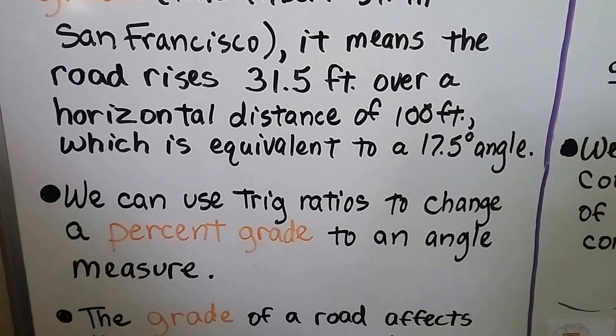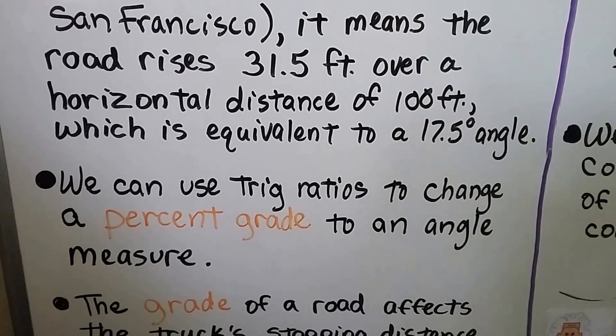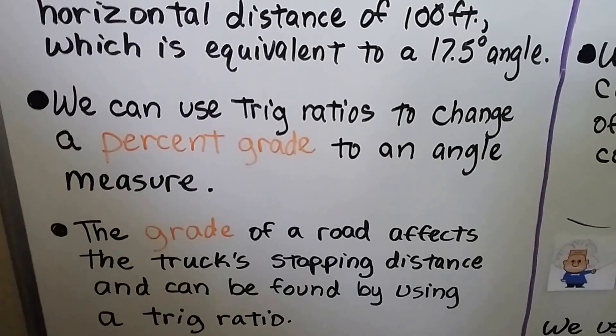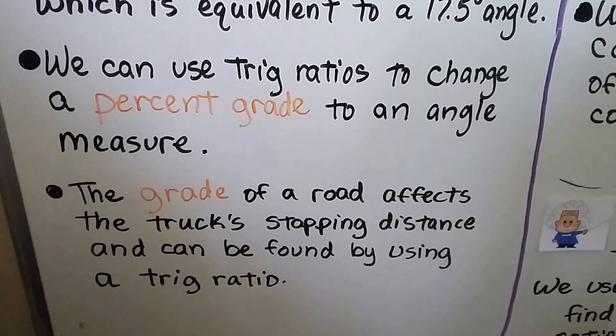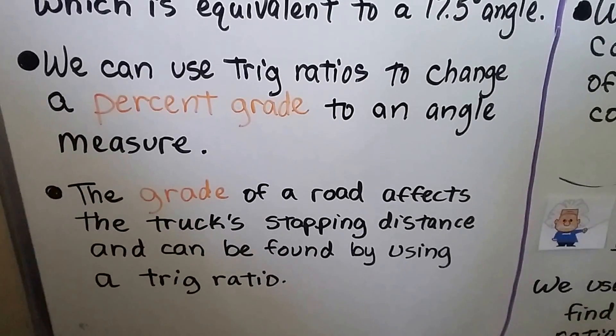We can use trig ratios to change a percent grade to an angle measure. The grade of a road affects the truck's stopping distance and can be found by using a trigonometric ratio.